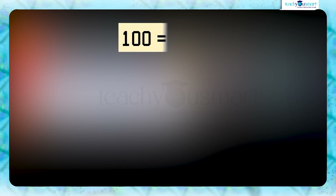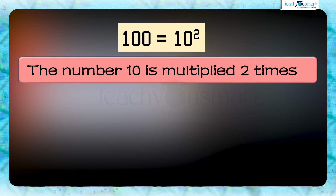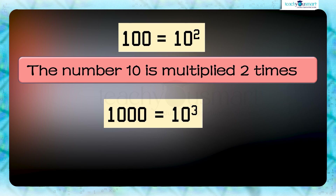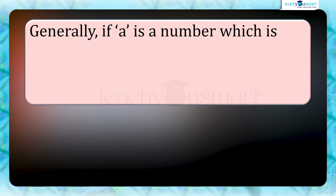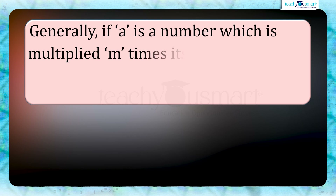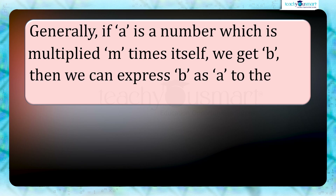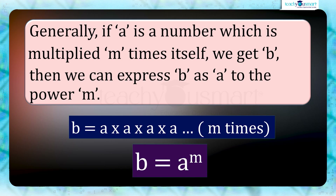We have seen that in 100 equals 10 squared, 10 is multiplied two times, and in 1000 equals 10 cubed, 10 is multiplied three times. So generally, if a is a number multiplied by itself m times to get b, then we can express b as a to the power m — that is, b equals a raised to m.